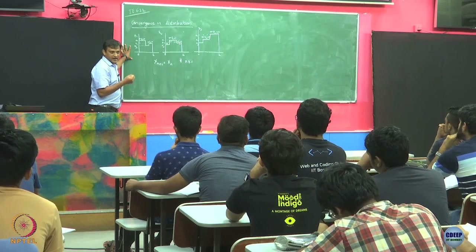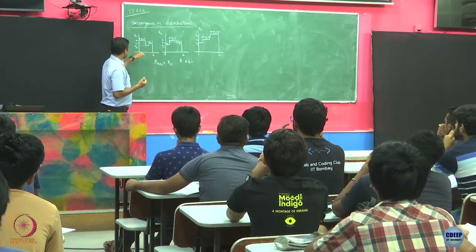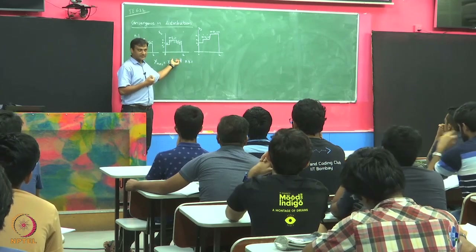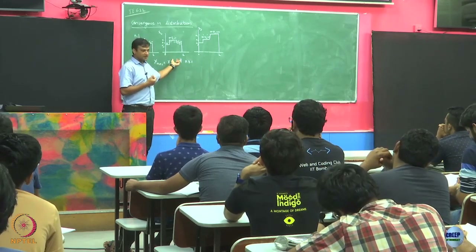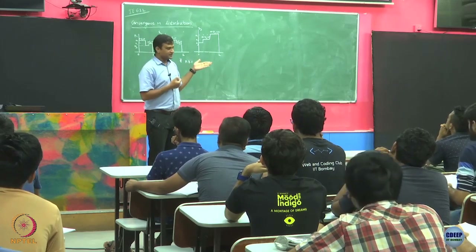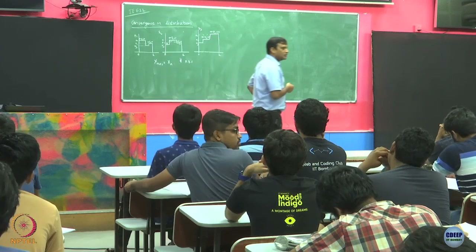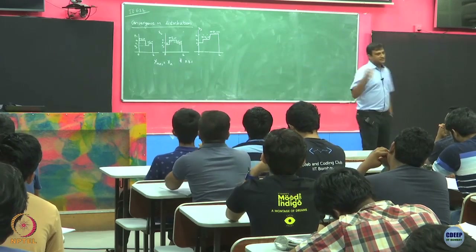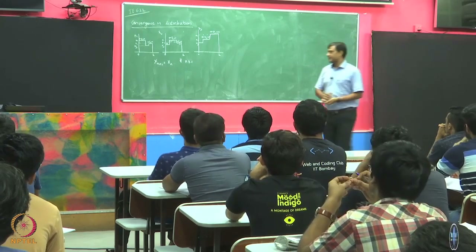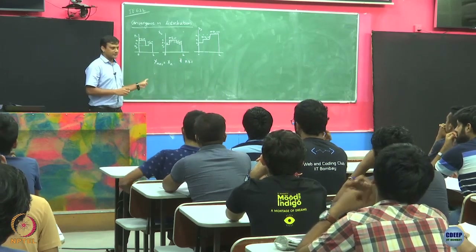x1 takes values a1, a2, a3 with probability p1, p2, and p3. And x2 is also taking the same three values a1, a2, and a3 with the same probabilities p1, p2, p3. So if you look at the distributions, these random variables are identical — they are the same. It is just that they are putting that mass on different intervals.